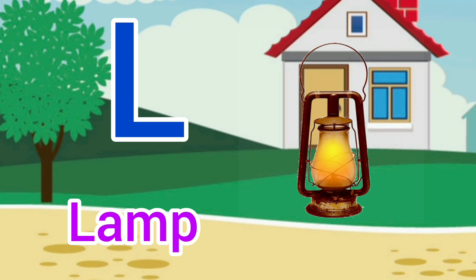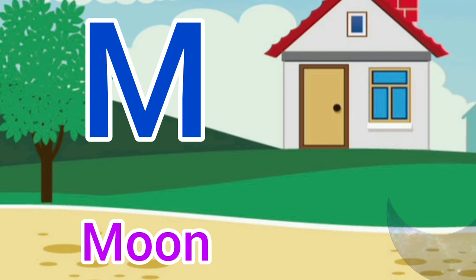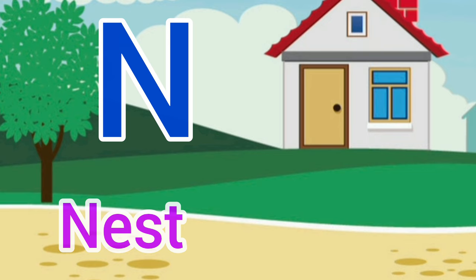M for moon, moon means chaad. N for nest, nest means ghosla.